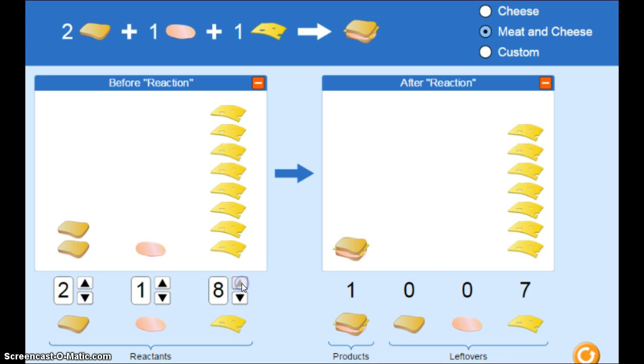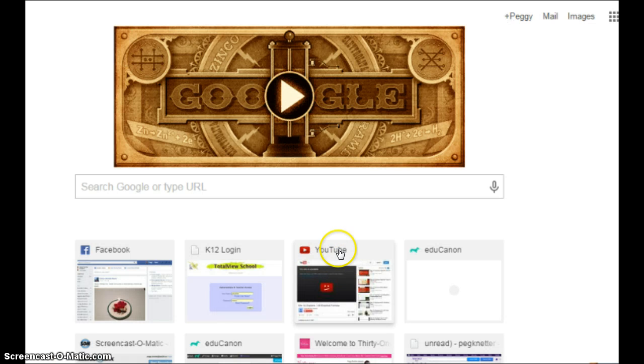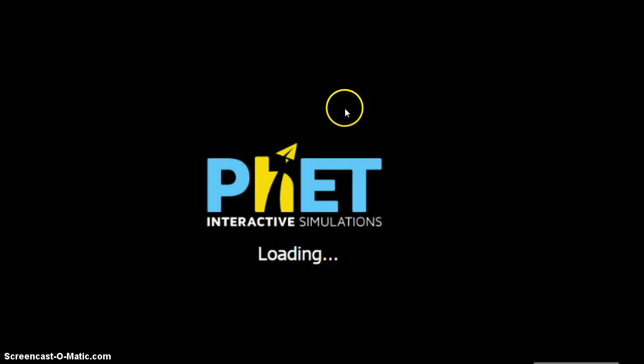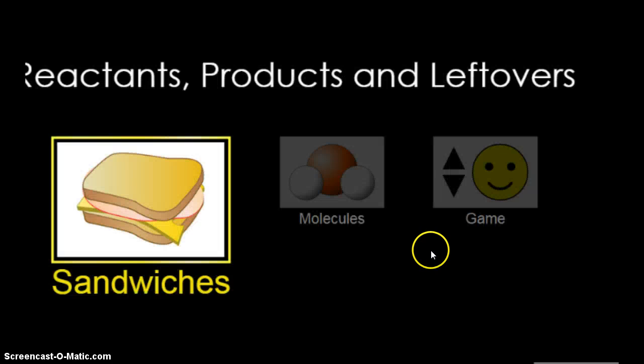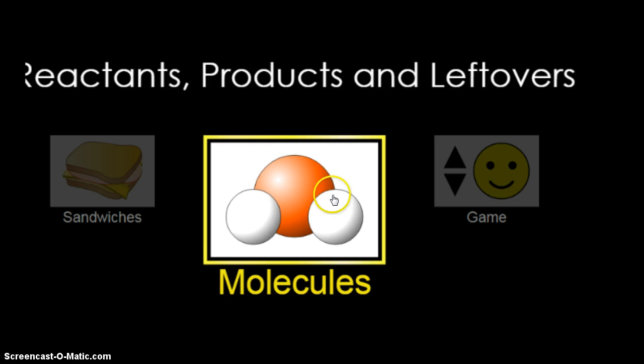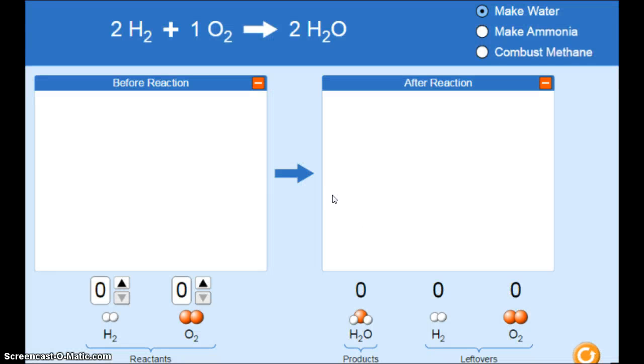If I make a meat and cheese sandwich, obviously I need two pieces of bread, a slice of meat, and a slice of cheese. It doesn't matter if I have eight pieces of cheese, I can still only make how many sandwiches? One. If you didn't have a chance to play around with that, please do.